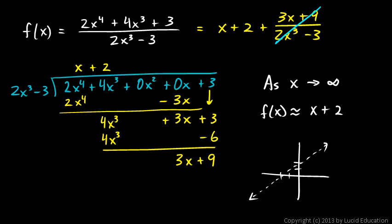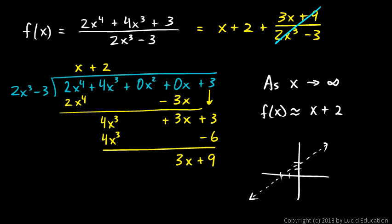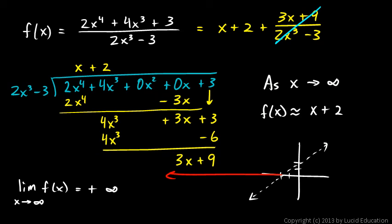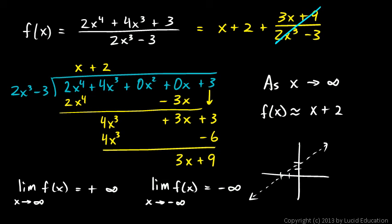Using that, you can immediately see the end behavior. If we're approaching this line, either from the bottom or top, as x gets big, the value of the function goes higher and higher. So the limit as x approaches infinity of f(x) is positive infinity. We've used limit notation to describe the end behavior of this function. And also in the negative direction, as x gets really big in the negative direction, this graph goes on down. So the limit as x approaches negative infinity of f(x) is negative infinity. That's the end behavior of this rational function described with limit notation.